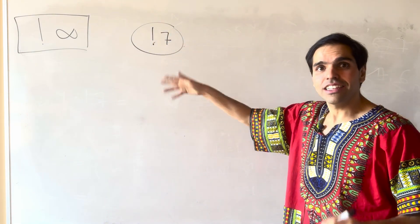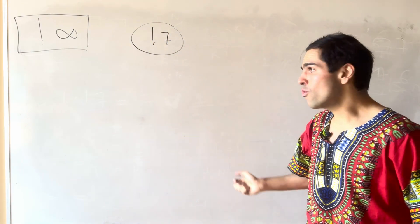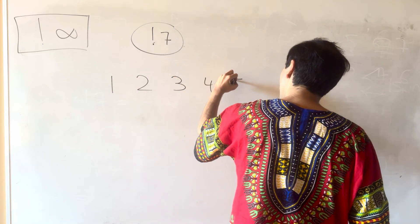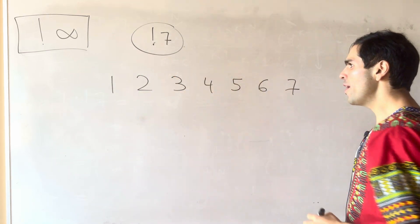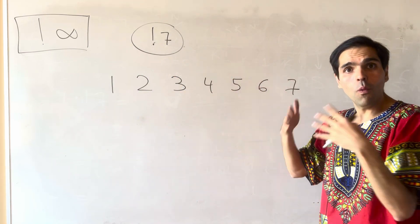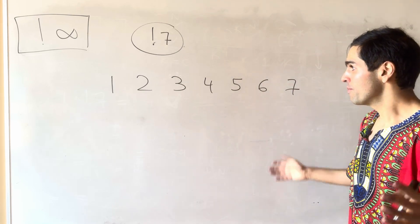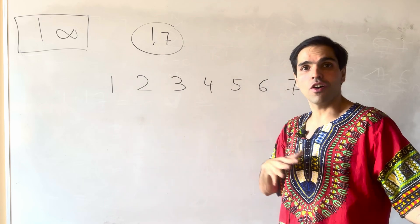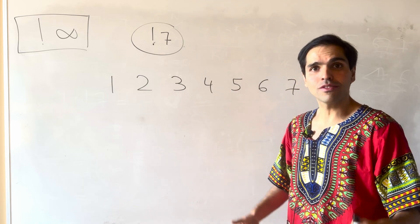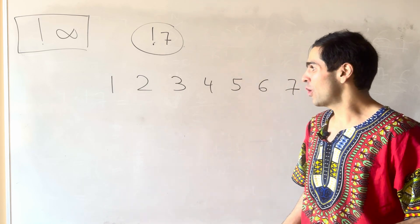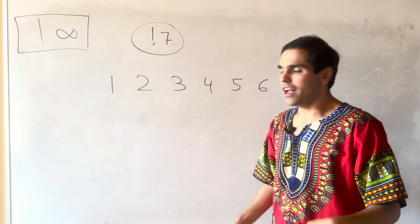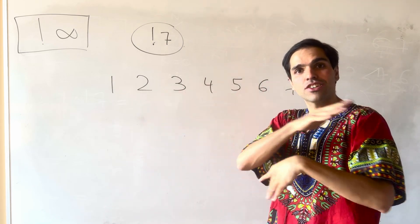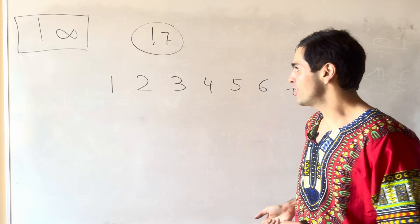So all it is, it's the number of ways of shuffling around seven people where no one gets matched to itself. So think, for instance, students grading each other's papers — you don't want a student to grade their own paper. Or for Secret Santa, where people get each other's gifts, you don't want to get your own gift.